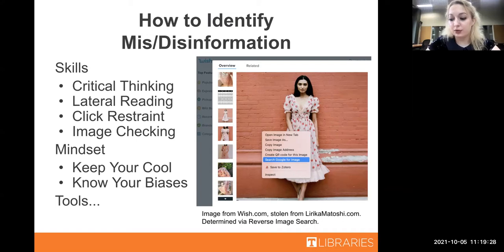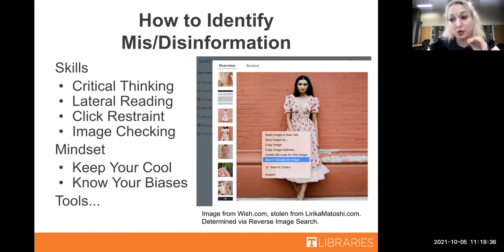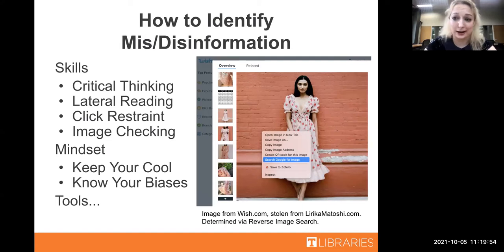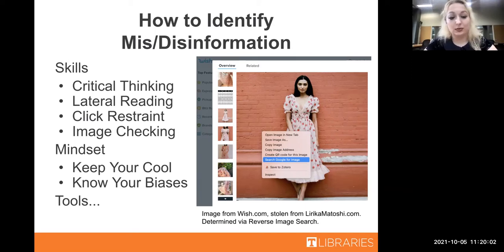Lateral reading differs from the basic information credibility testing that used to be pretty effective in the past. You could look for context clues on the website itself to see if it was a source you should trust - we've all seen older websites that look really sketchy and you know immediately to look somewhere else. But now, even sources telling you complete lies can look extremely professional. That's why you need to get off the page and look at other sources to see what they say about this information before deciding whether to trust it.